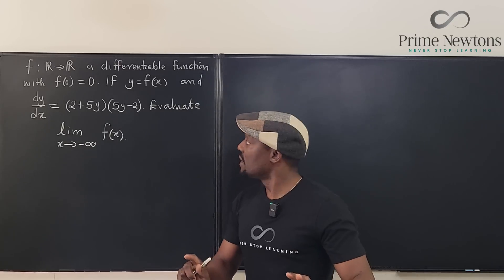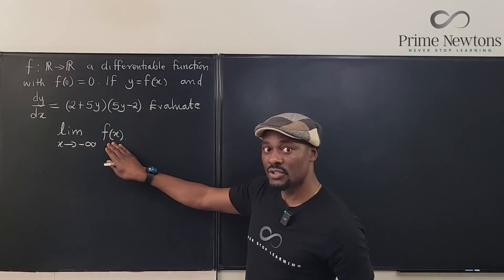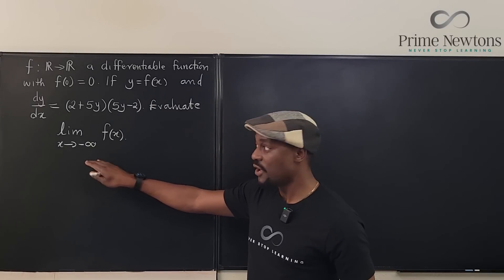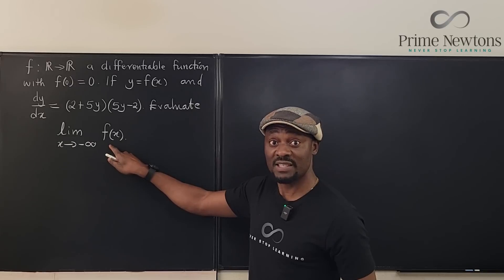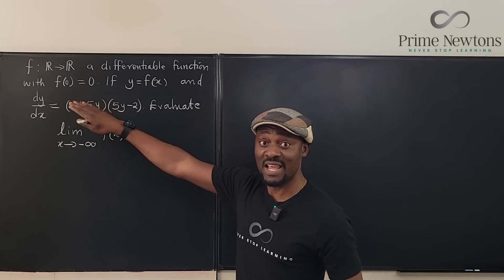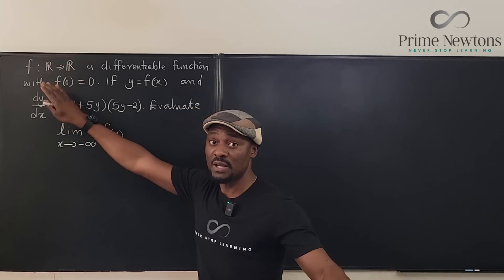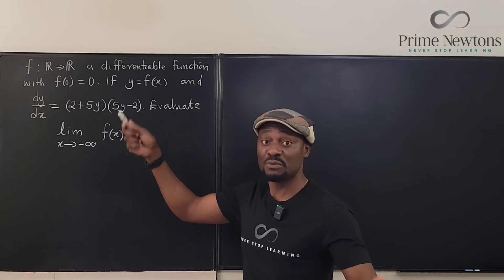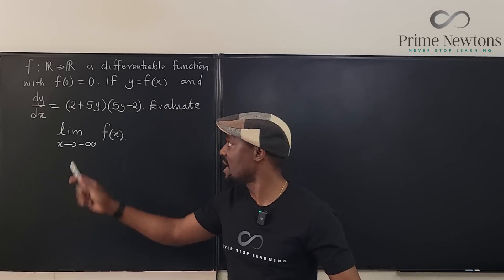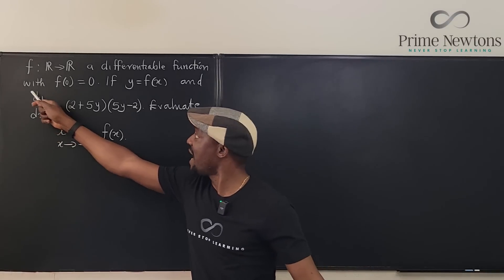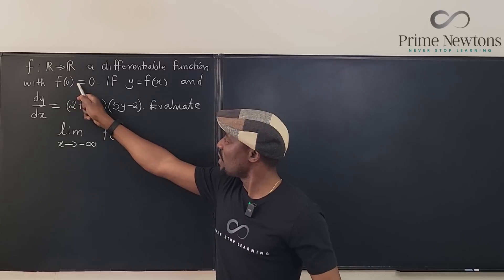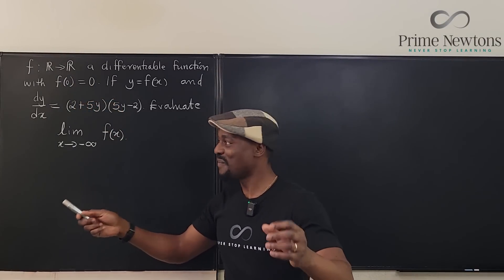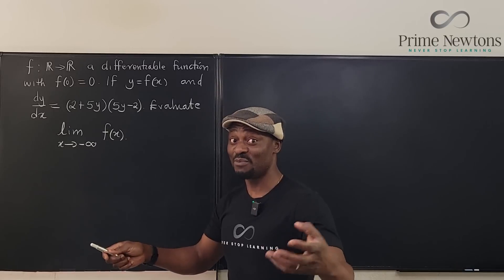Our mission is to find the limit of this function, f of x, as x approaches negative infinity. It means we have to find what f of x is, so we go back to the beginning. f is a function that maps all real numbers to real outputs, and it is a differentiable function, which means you can find f prime of x. That's why we have dy/dx. And with f of 0 equals 0, which means when x is 0, y equals 0. So this is an initial value problem.